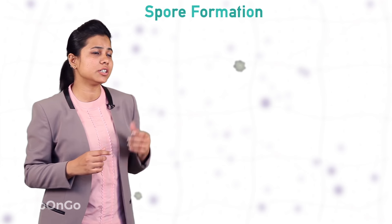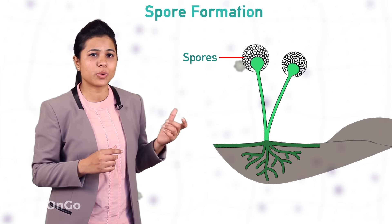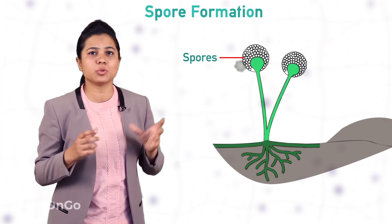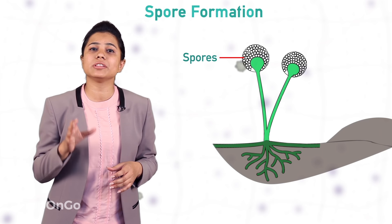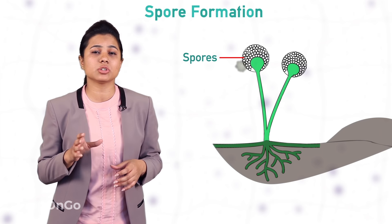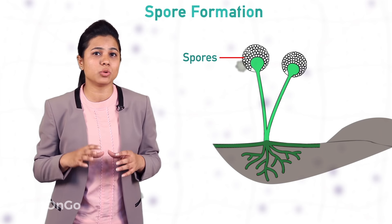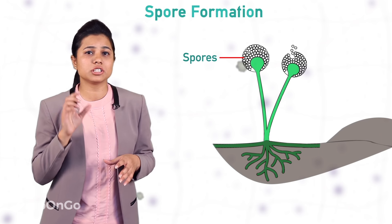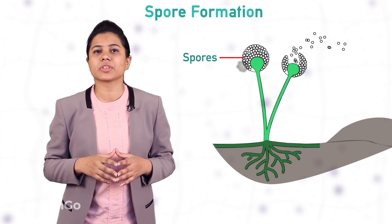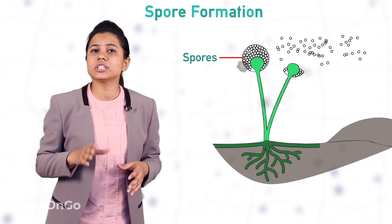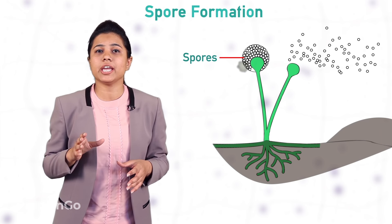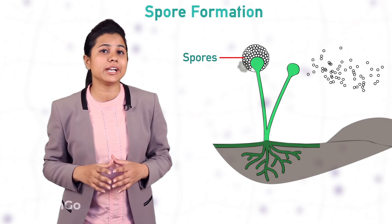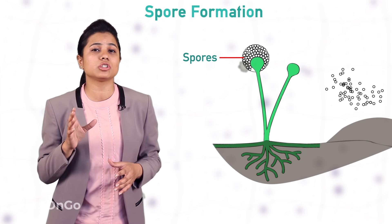You can see here the Rhizopus fungus with the sporangium and the spores in it. When the spore case in which the spores are contained bursts, the spores are released into the air and spread through the air, landing on food items like a wet slice of bread.